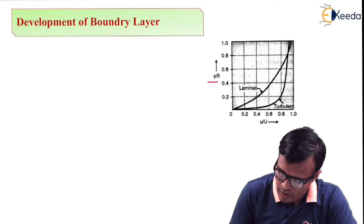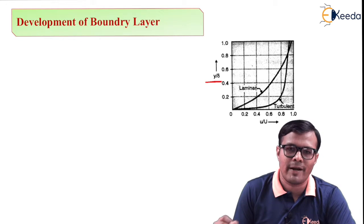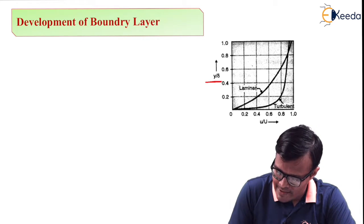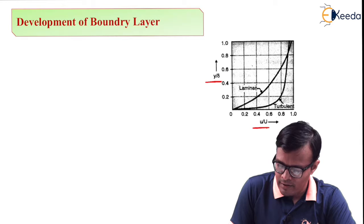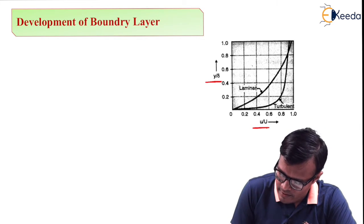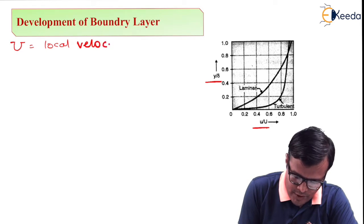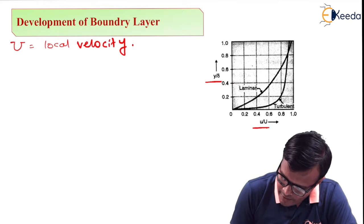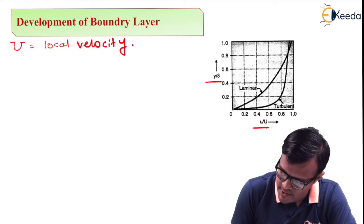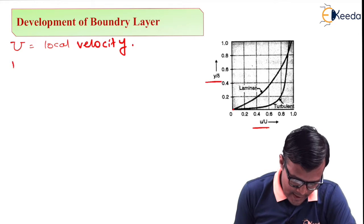If I want to talk about this y distance with respect to depth that is delta and velocity u, where actual u is denoted by symbol capital U, this is called local velocity. Boundary layer begins at the edge. This is origin, this is value 0, and as velocity increases...